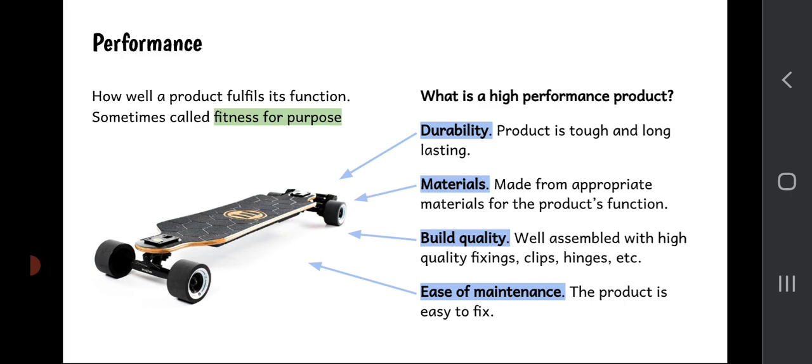We talk also about material choice. Whether the object, the product in question, has been made from appropriate materials for the product's function. So is it an appropriate choice of material? Can it be colored? Is it strong enough? Will it rust or tarnish? All things like that. So if we want a high-performance product, we have to choose the best materials for it.